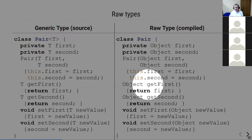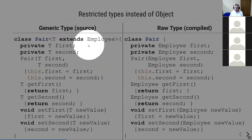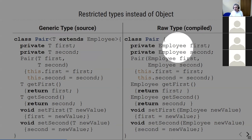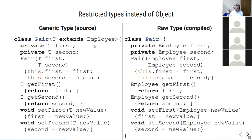This is type erasure: when compiling source code, the type parameter T is erased and replaced with Object. If we use a bounded type — T extends Employee — then T is erased to its bound, Employee, at the bytecode level. We know it's at least an Employee; it might be Manager or Programmer, but must be Employee.